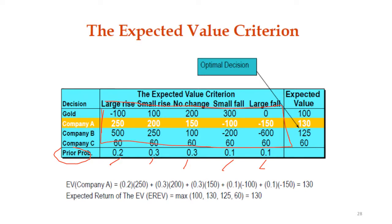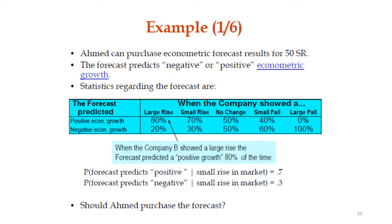Later we discussed economics, where we get additional information in the form of positive economic growth and negative economic growth. We were also given sample information in the form of probabilities for each state of nature: large rise, small rise, no change, small fall, and large fall.